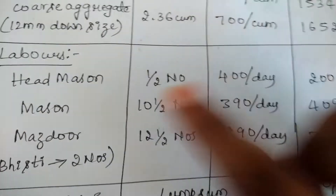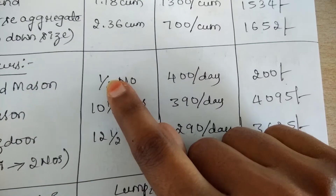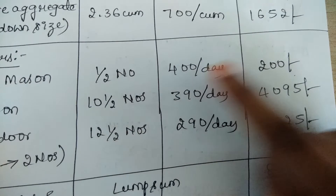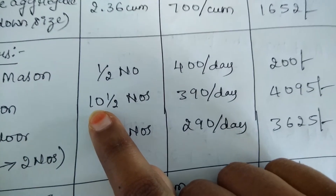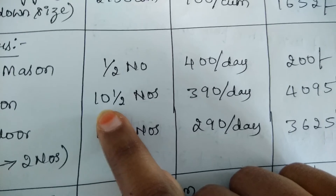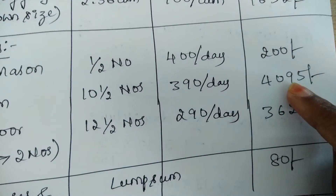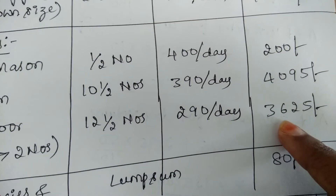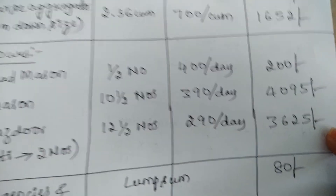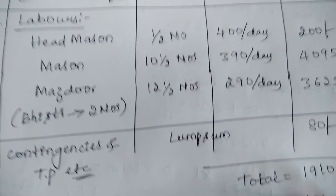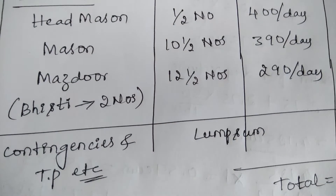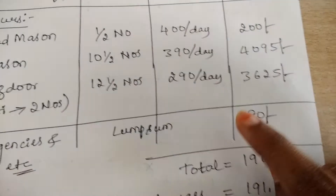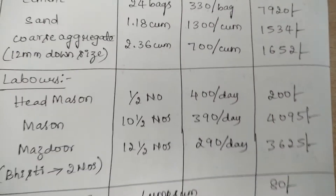Whatever rates are fixed for all types of labors are written in the table. For finding the amount, multiply quantity with rate: 0.5 × ₹400 = ₹200 for head mason; 10.5 × ₹390 = ₹4095 for mason; 12.5 × ₹290 = ₹3625 for masdur. So this gives the amount for the labors. Moving to the contingency part — for extra charges and transportation charges, we assume a lump sum amount of ₹80.